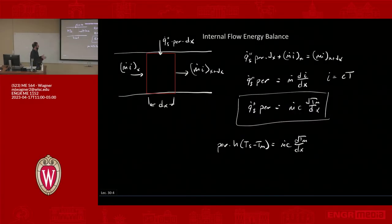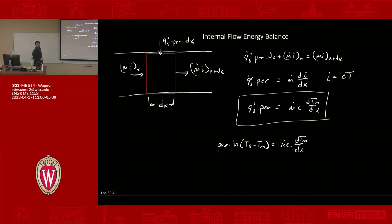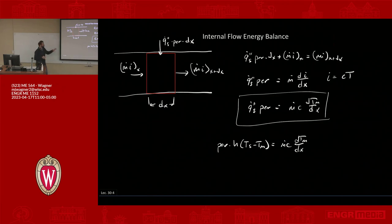Last time we ended talking about internal energy balance or internal flow energy balance. We went through and derived this differential equation for Tm as a function of position. What we're trying to do in this internal flow problem is come up with an expression that lets us predict the mixing cup temperature, the mean temperature. That Tm is what we would then use when evaluating heat transfer between the wall and the fluid.